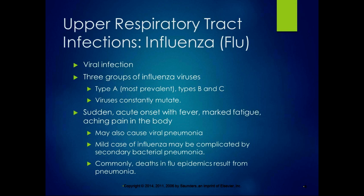Influenza is a viral infection. There are three different groups — Type A is the most prevalent, with Types B and C as well. Viruses are constantly mutating. You can tell the difference between a cold and the flu by the sudden acute onset with fever, marked fatigue, and aching pain in the body — that's your flu. The influenza virus can also cause viral pneumonia, and a mild case can be complicated by secondary bacterial pneumonia. Many deaths in flu epidemics result from secondary bacterial pneumonia.